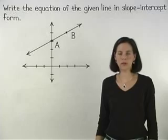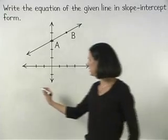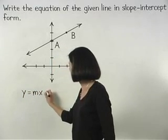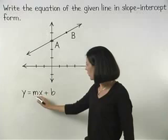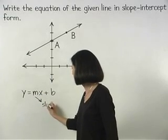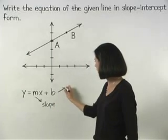Remember that slope-intercept form is the same thing as y equals mx plus b form, where m represents the slope of the line and b represents the y-intercept.